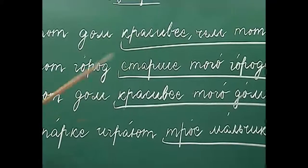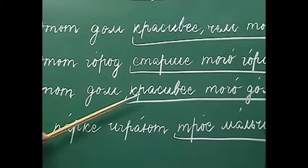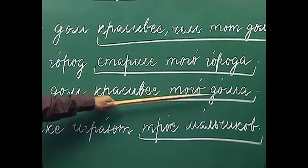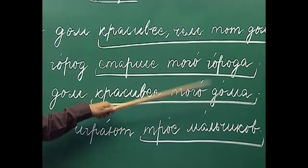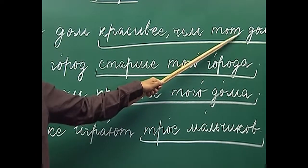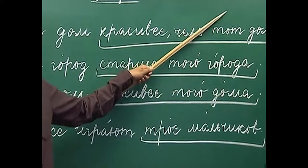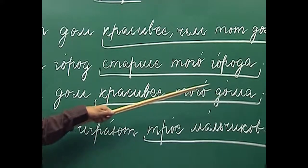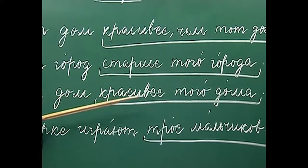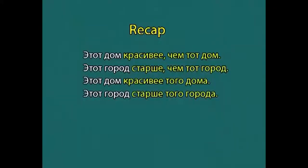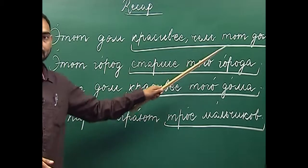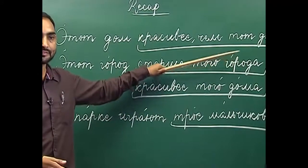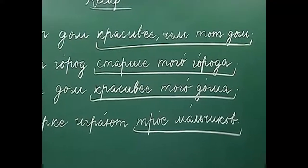The same sentence can be written differently: 'etot dom krasivee togo doma'. As you can see, we have not used the word 'chem'; instead we have used the genitive singular of the noun. 'Togo doma' is the genitive case form of 'tot dom'. By using the genitive case of the noun being compared, we can also express the comparative degree. For example: 'etot gorod starshe togo goroda' — This city is older than that city.